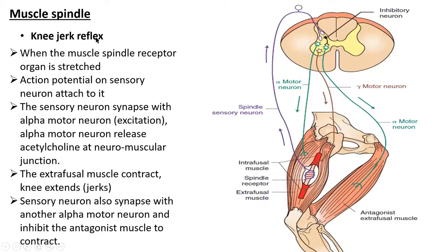The knee jerk reflex is an example: when the muscle spindle is stretched, the sensory neuron enters the dorsal root and directly stimulates the alpha motor neuron, causing contraction of the same muscle. At the same time, the sensory neuron synapses through an interneuron, preventing the alpha motor neuron of the antagonistic muscle from firing, so the knee jerk can occur.